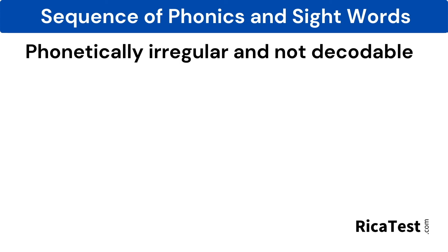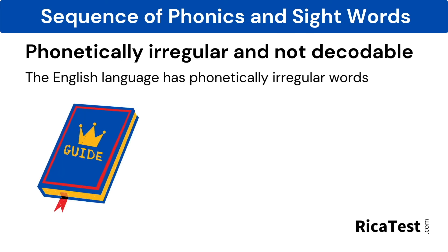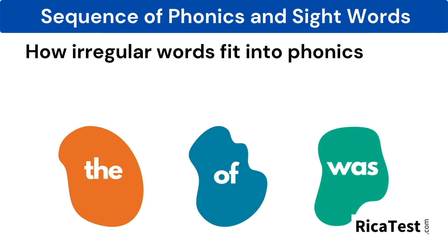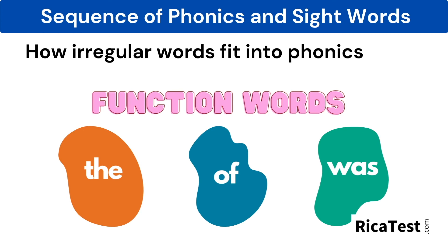Moving on to the next sequence of teaching phonics and sight words, we have why some words are phonetically irregular and some are never decodable. The English language has phonetically irregular words which do not follow the general rules that work most of the time. Common examples include of, the, and was. The English language is unique in that the rules of language are often broken, meaning there are plenty of exceptions. For this reason, we teach sight words, which are words that students are taught to memorize as whole units. The majority of these irregular words are placed in a category called function words, because by themselves they don't carry meaning. Examples include the, of, and was, but there are many others too.